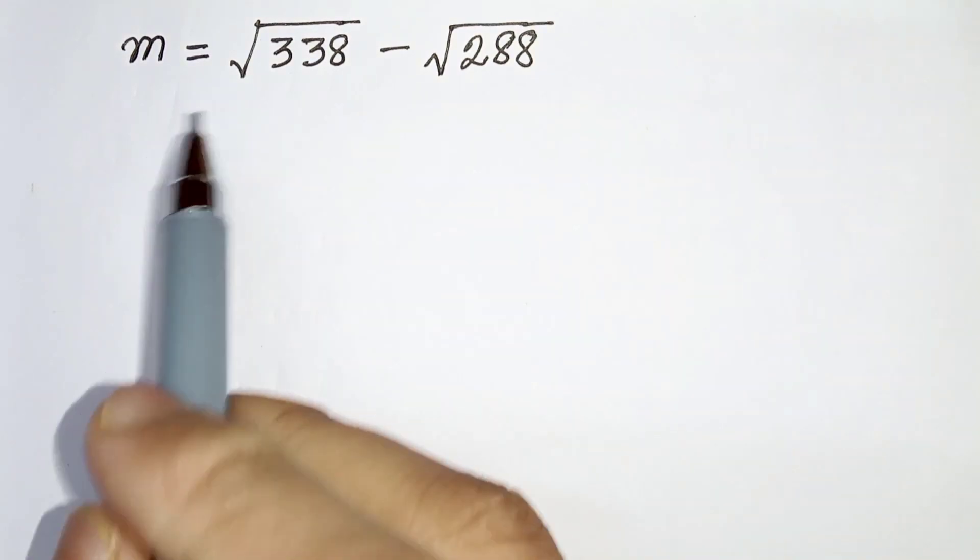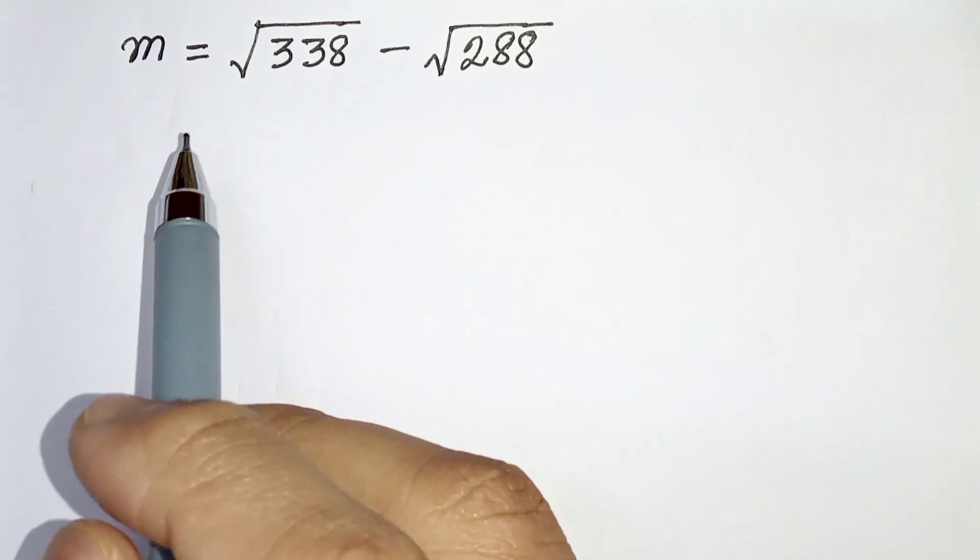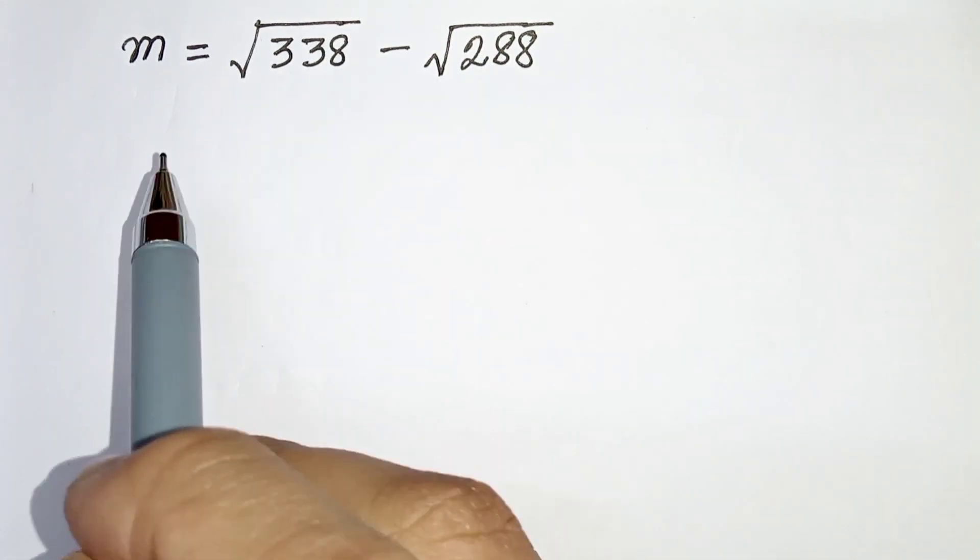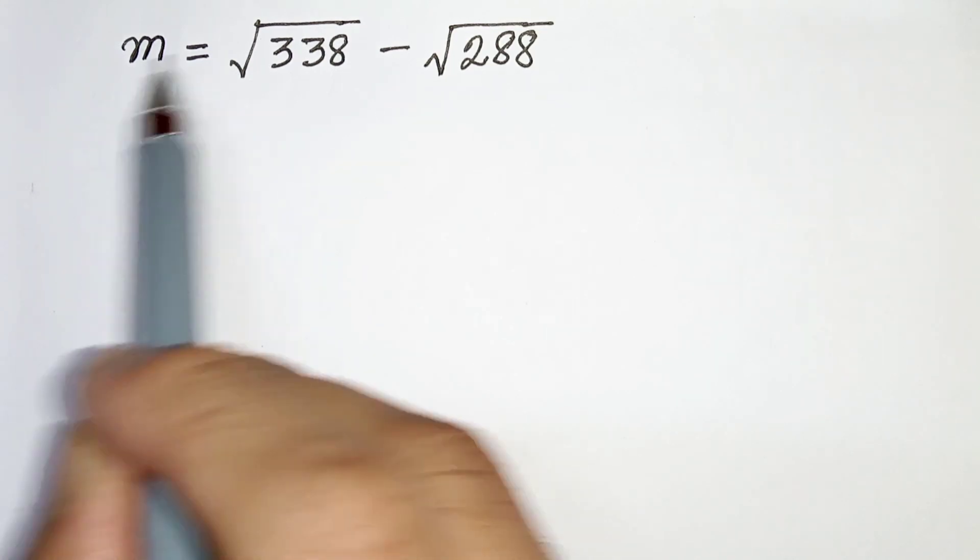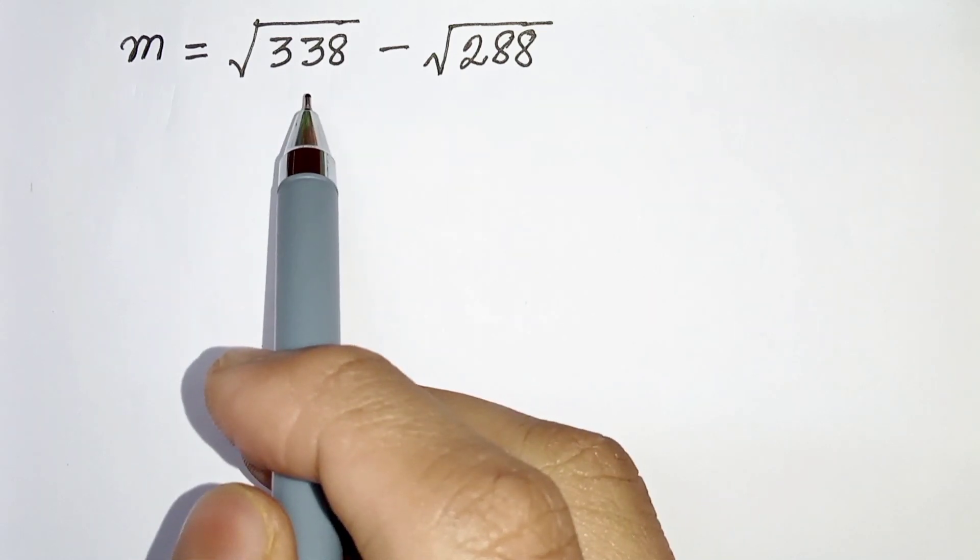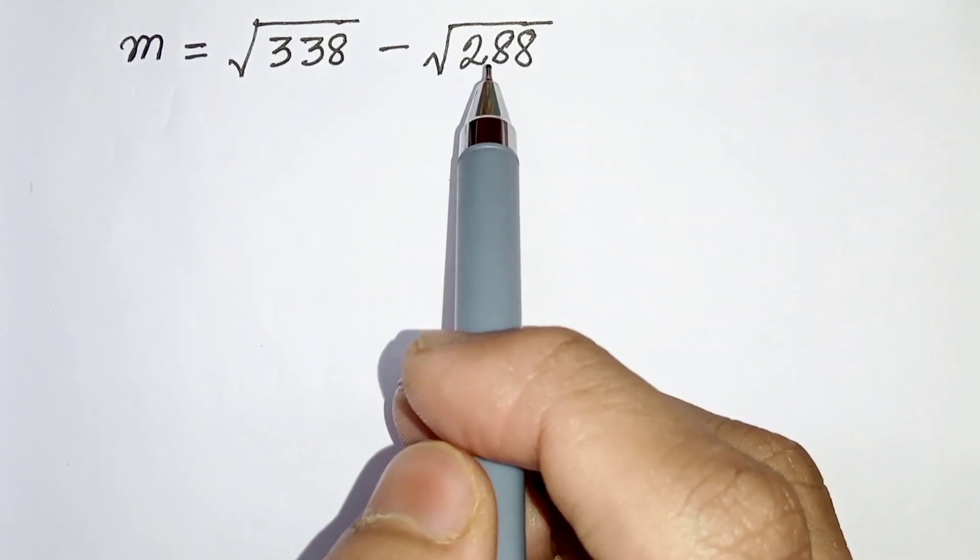Hello everyone, in this video we have this simple arithmetic problem. Here given that m equals root under 338 minus root under 288, so we have to find the value of m. Let's start. We know that 338 cannot be represented as a perfect square and also 288 cannot be represented as a perfect square.